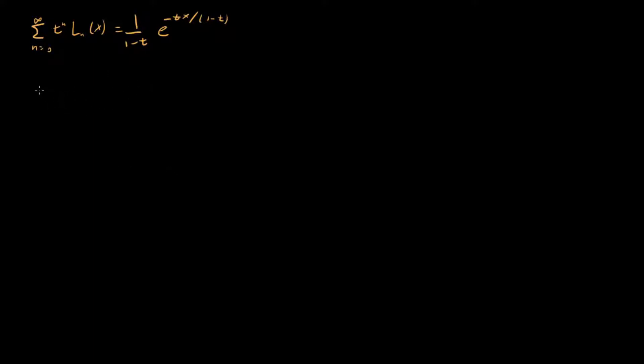So if we take an x derivative of both sides, what do we get? We get sum n equals 0 to infinity t to the n L_n prime of x. This is equal to what? Well, taking this exponential derivative with respect to x is easy. We're going to get minus t over 1 minus t squared e to the minus t x over 1 minus t.